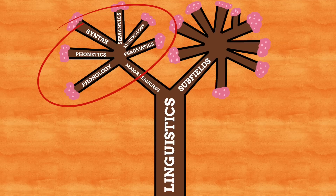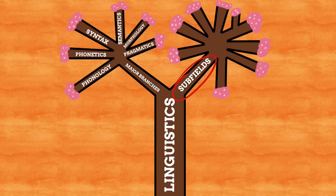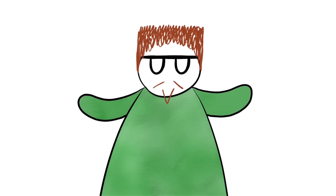That's the major branches of linguistics covered, but there is so much more to language. We can now look into the subfields of linguistics. This is when we take those major branches and apply them to specific situations and fields. There are a huge amount of subfields in linguistics because, as mentioned, language is used everywhere — if it exists, it means the language used within it can be examined and studied too.